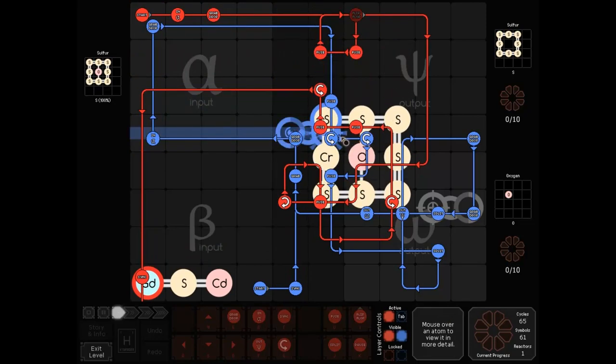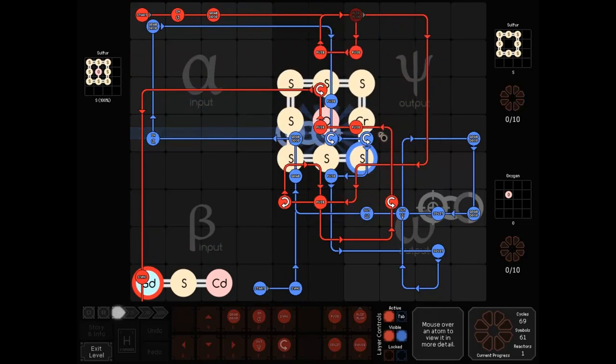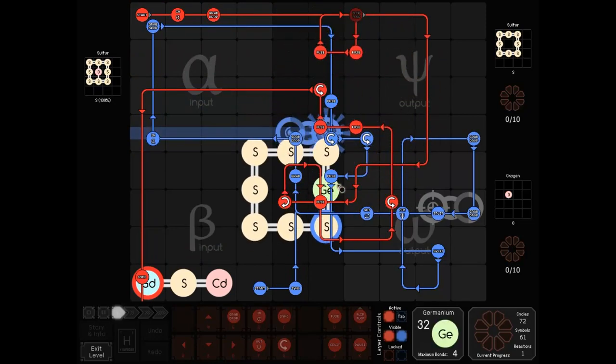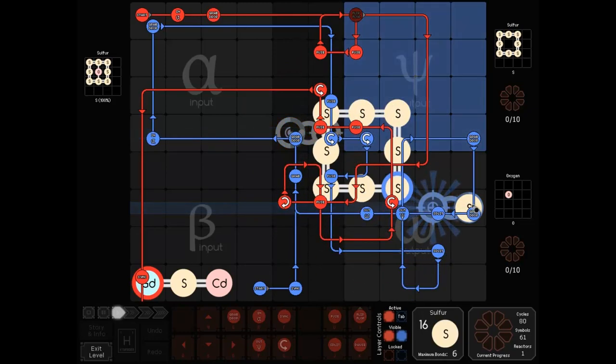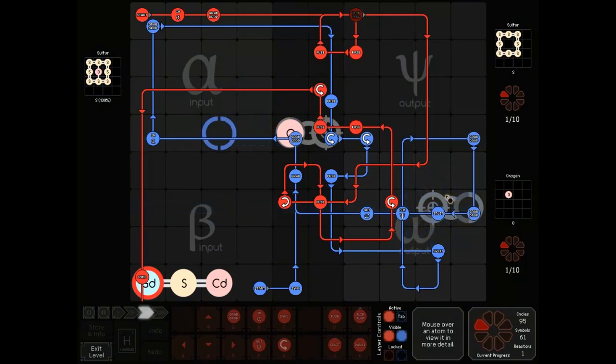You have to fuse your one oxygen in, rotate this thing around, fuse it one more time to get your manium, split it out, sulfur, split that sulfur to create your oxygen, and repeat the cycle.